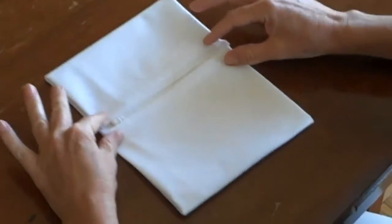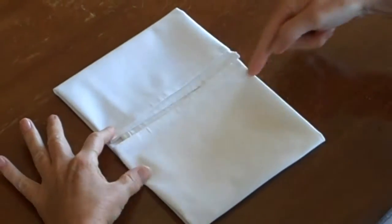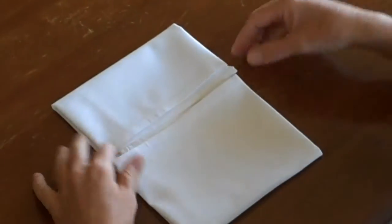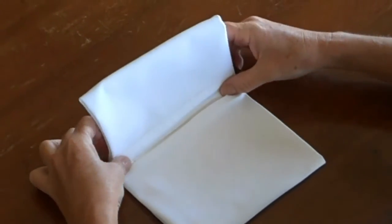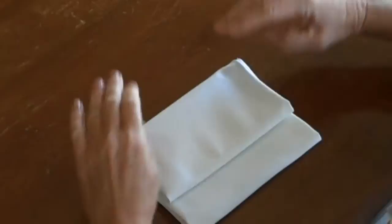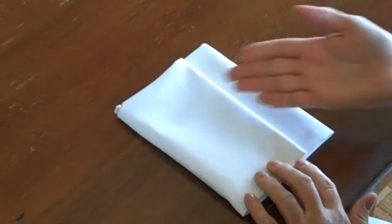And notice when they meet, they'll be a little bit off of the center line. That's exactly what we want. If we fold it at that natural crease, we will have our napkin the wave.